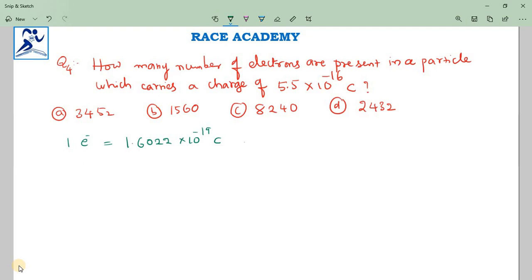The given particle charge is 5.5 × 10^-16 coulombs. We need to find how many electrons are present. If we say x number of electrons are present, then we can do cross multiplication.